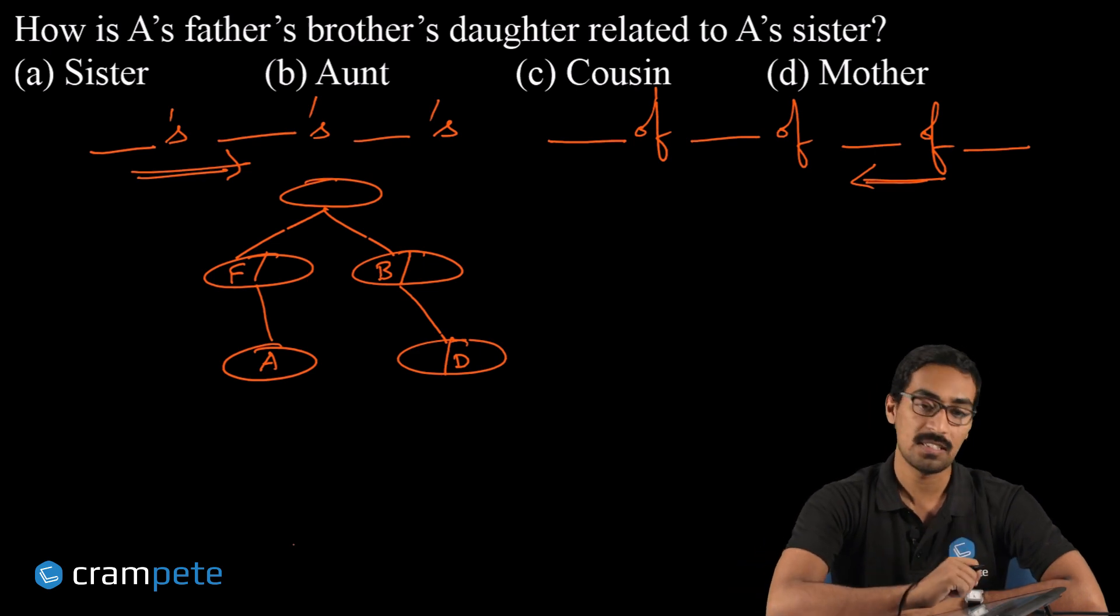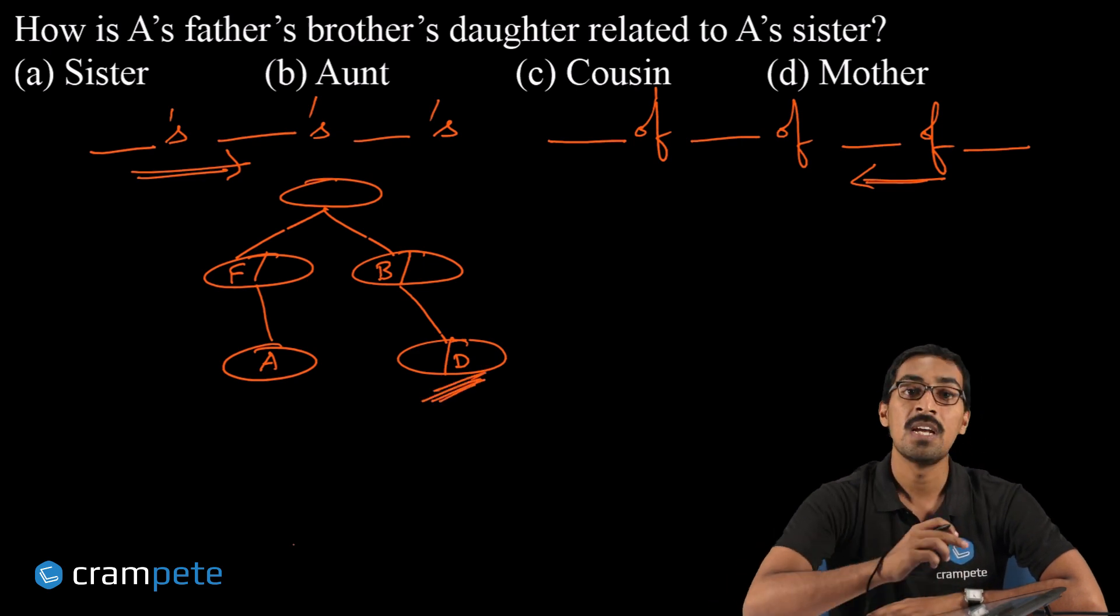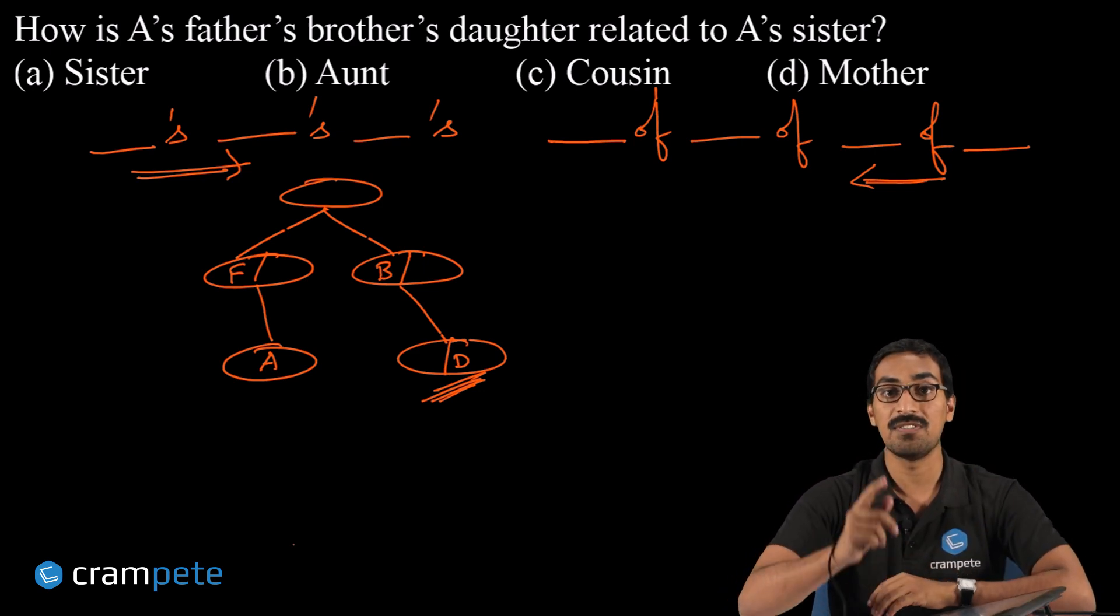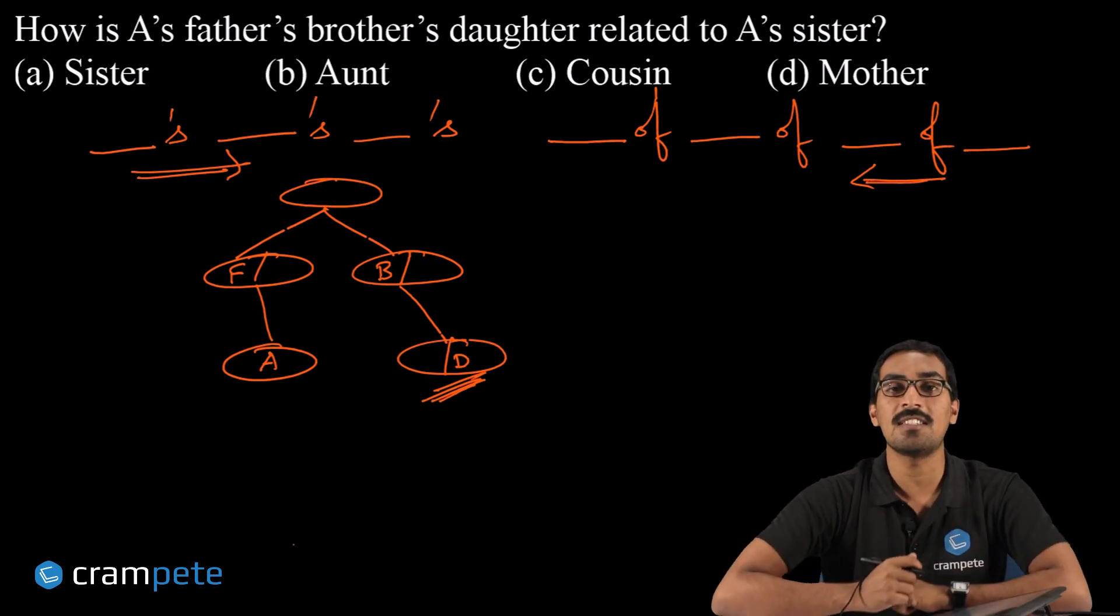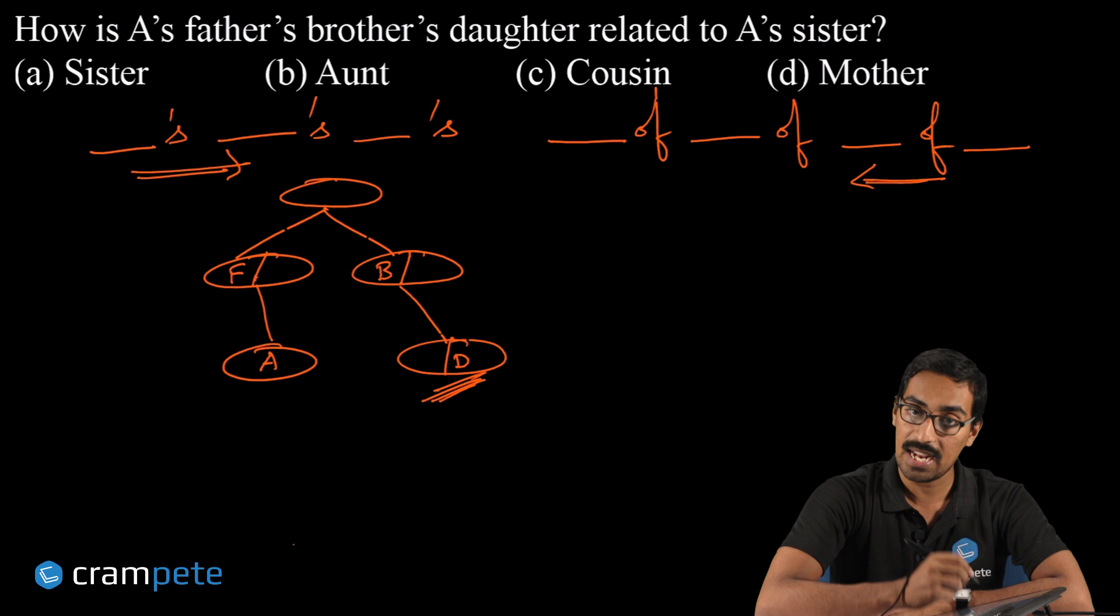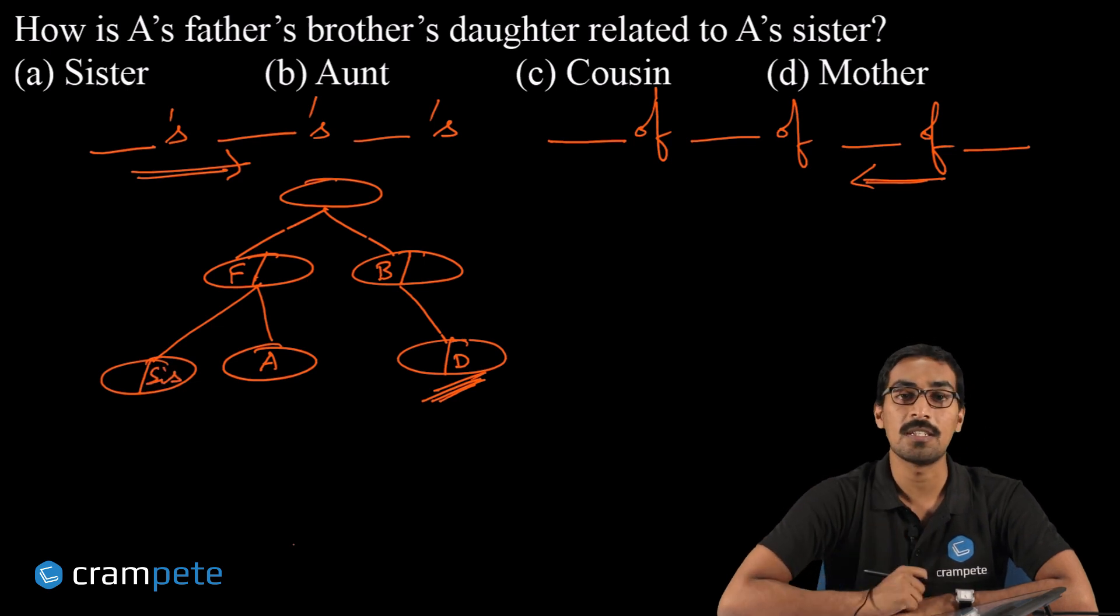Now the question is: How is A's father's brother's daughter—that is, how is this person D—related to A's sister? Related to not A, A's sister, it seems. Which means A first has a sister, isn't it? Yes. So this father, that is A's father, has at least a daughter who has to be a sister, isn't it?